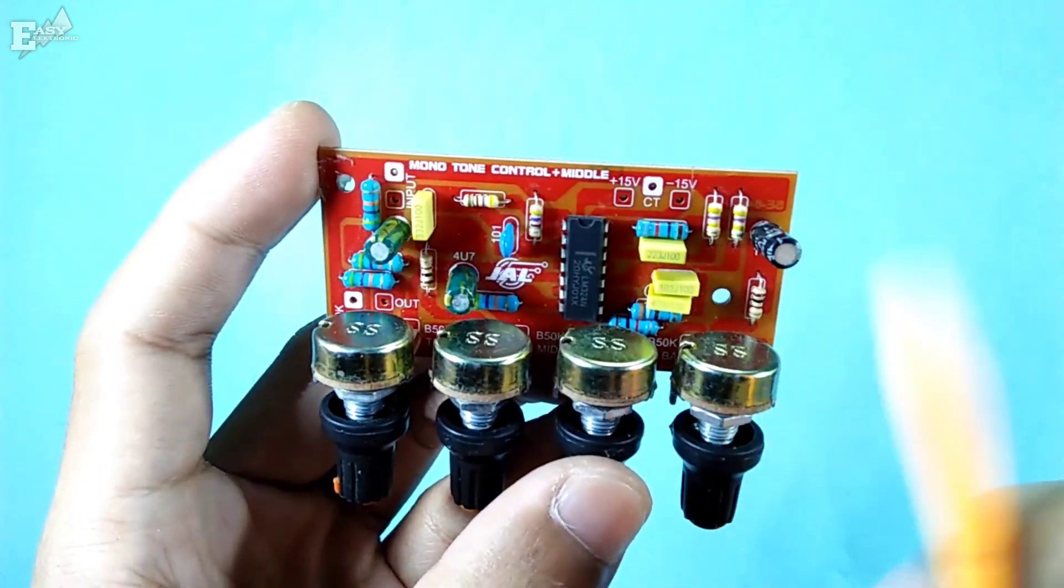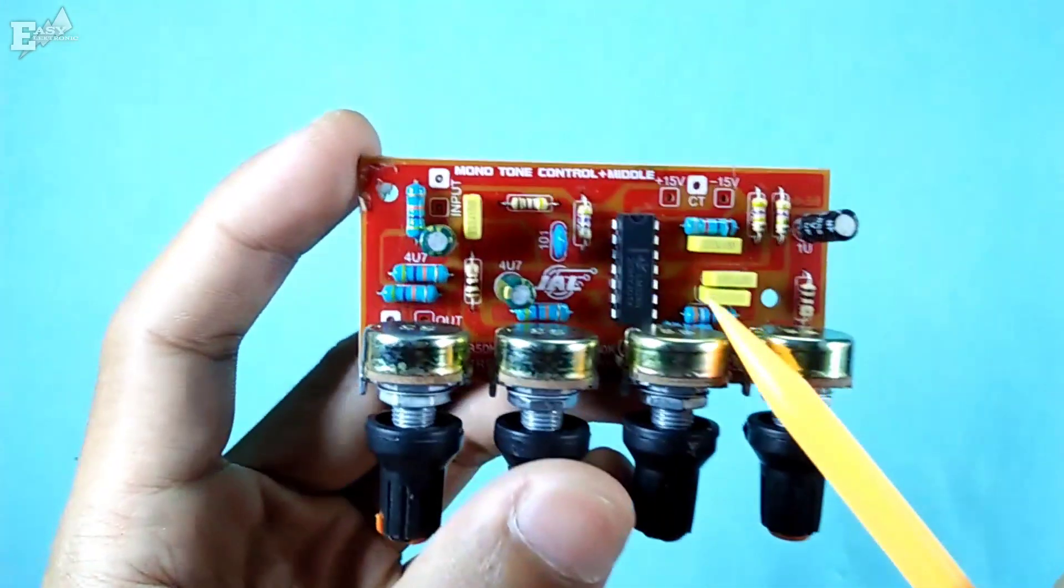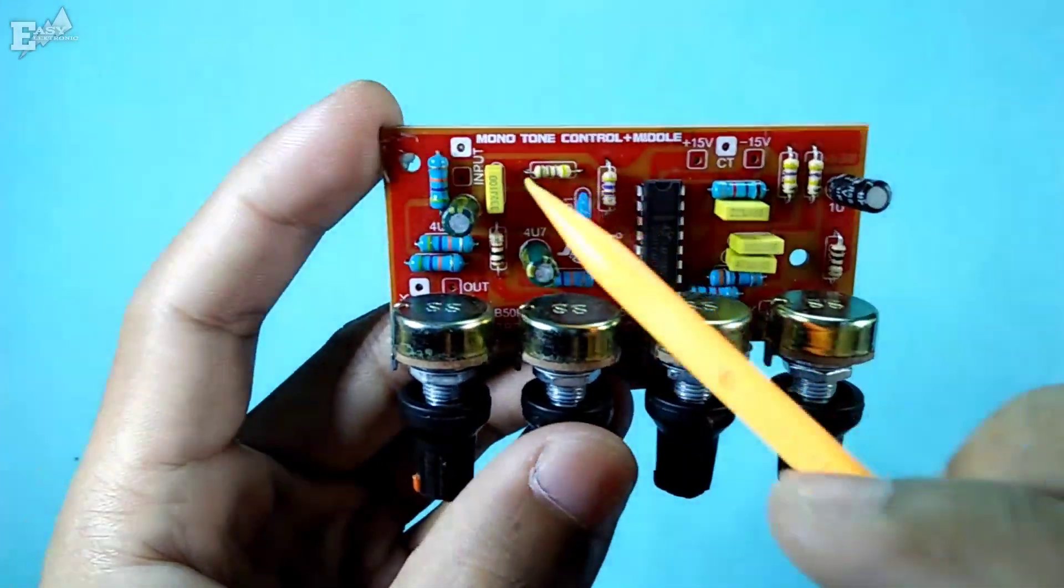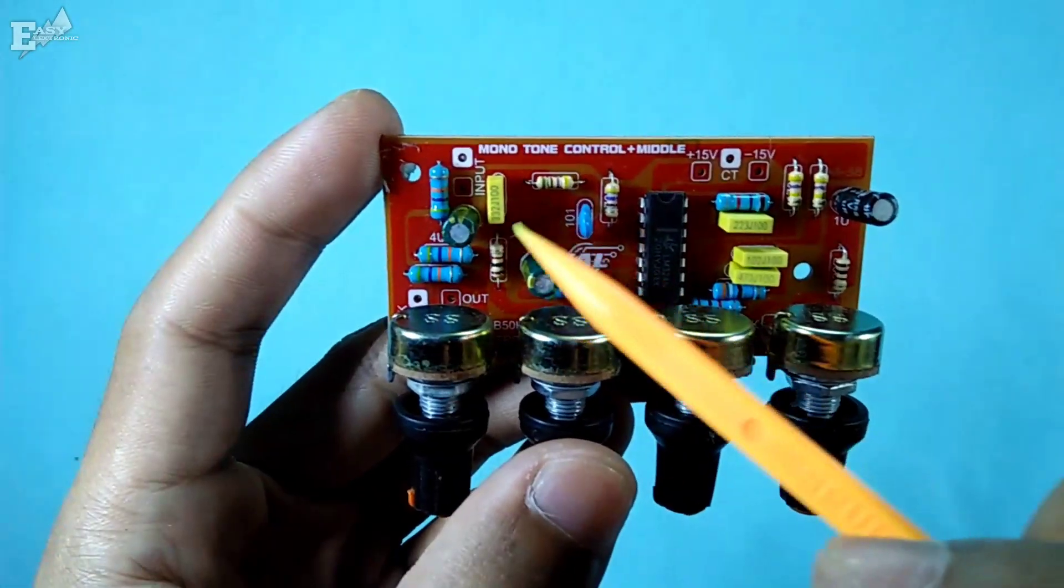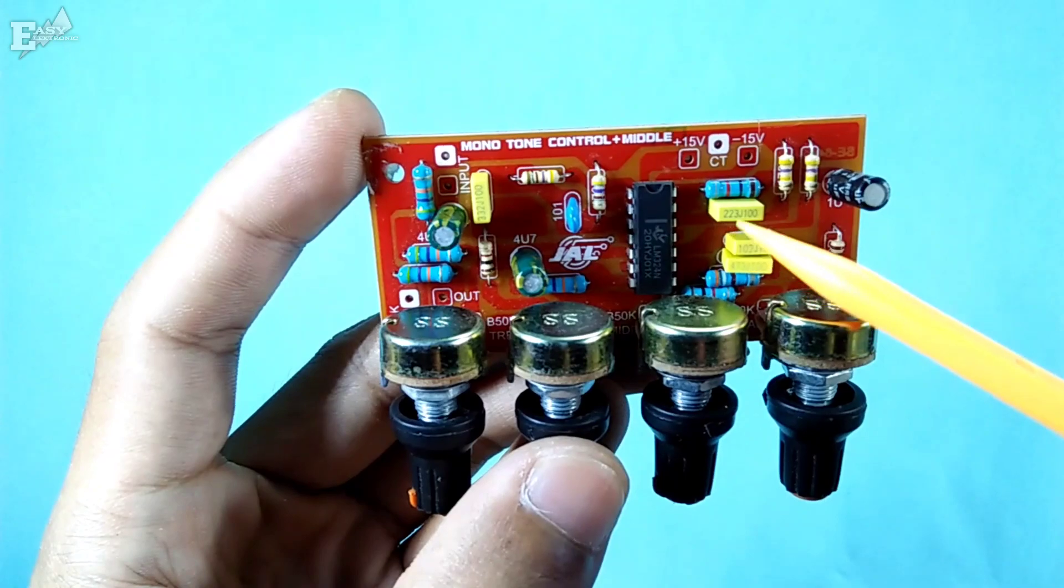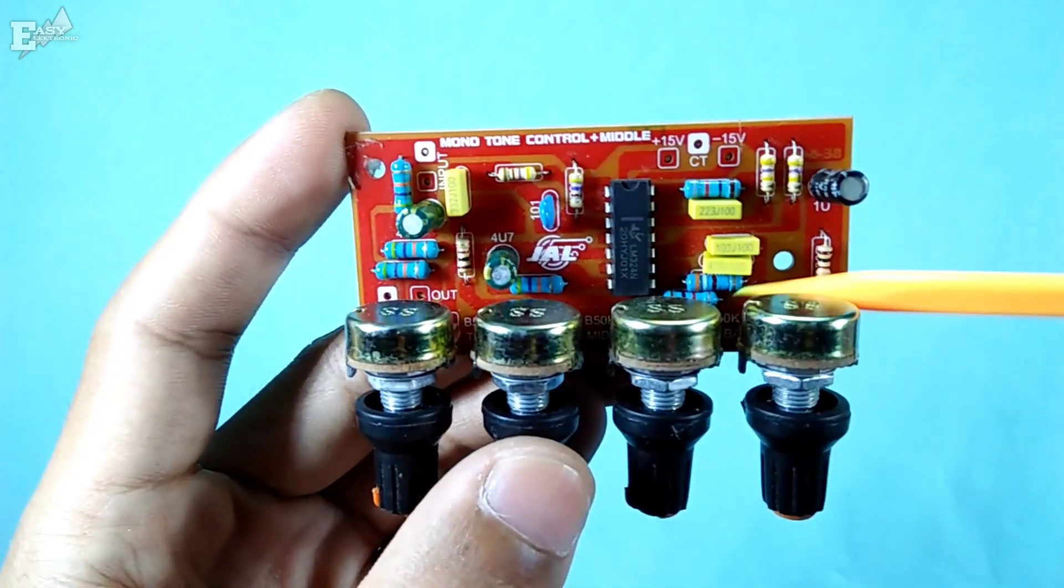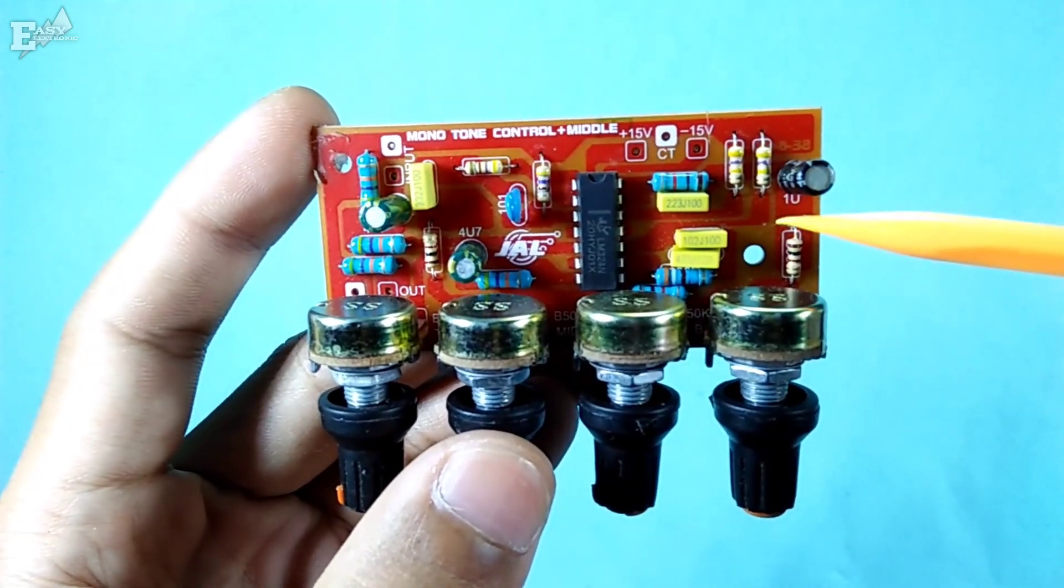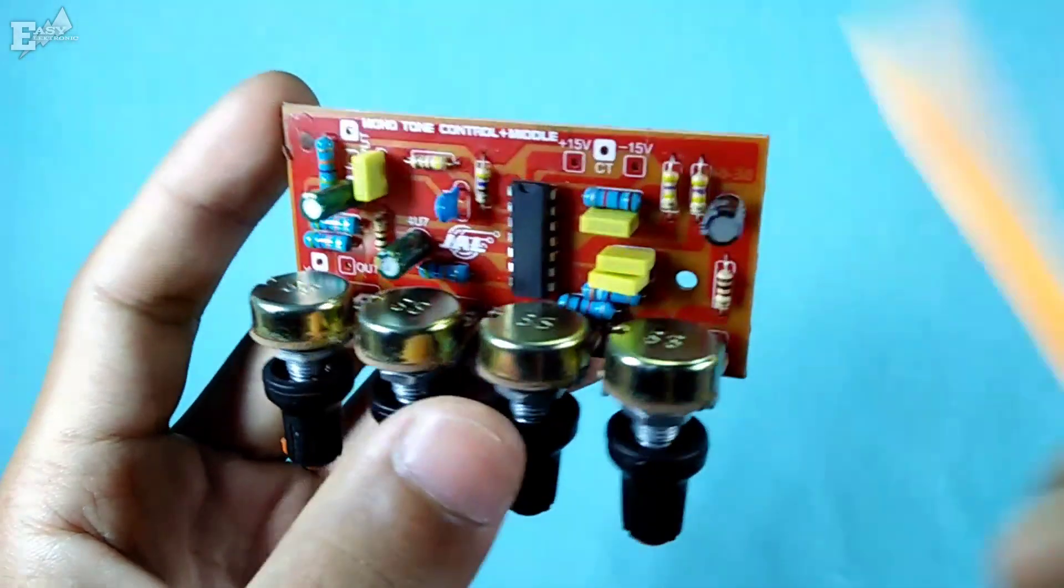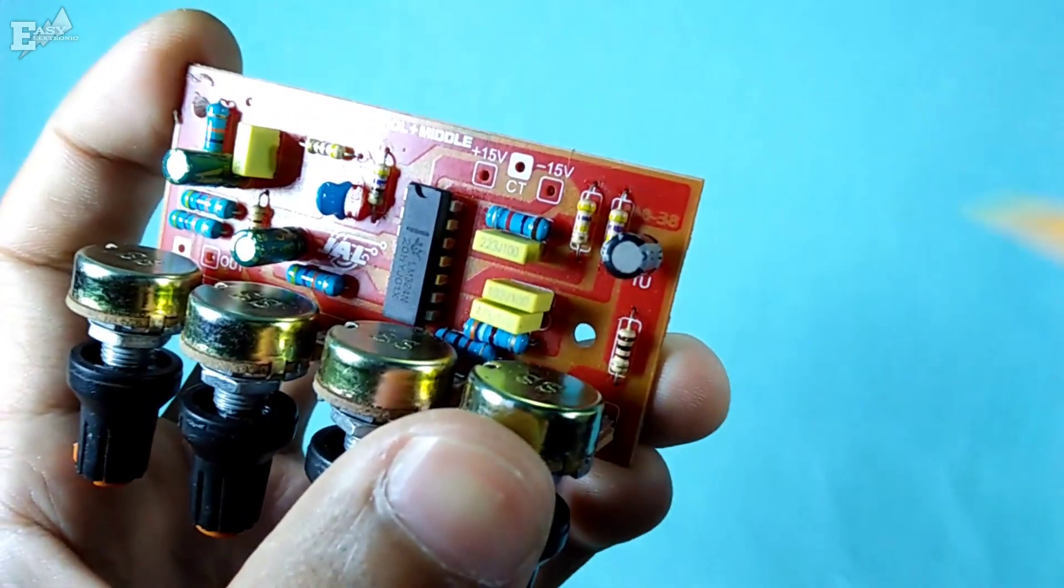To modify it, you need to know the sections first. This is the high section with a 2.2 nano capacitor here. This is the middle section here. And this is the low or bass section over here. You need to know which part needs to be fixed.